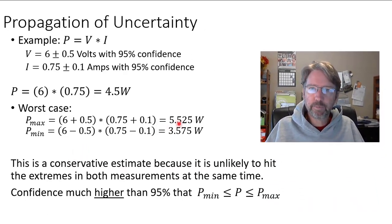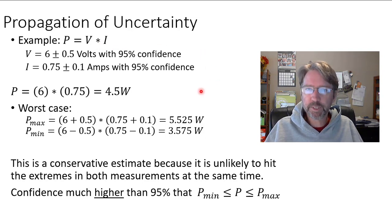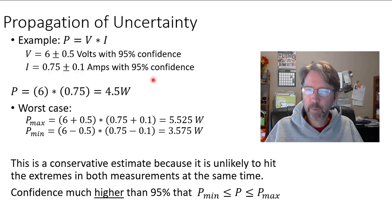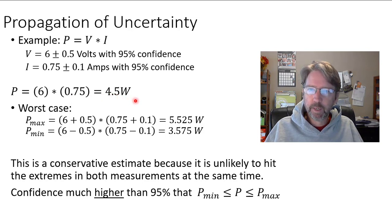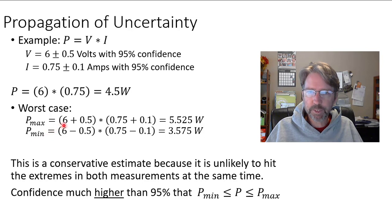Here's an example: calculating power as voltage times current. We do it the intuitive, worst-case way. We have voltage measured at 6 volts plus or minus 0.5 volts, and current at 0.75 amps plus or minus 0.1 amps, both with 95% confidence. Calculating the power, we take voltage times current and get 4.5 watts. One way to find the uncertainty is to look at the worst case — the maximum voltage is 6 plus the uncertainty, and the minimum is 6 minus the uncertainty.